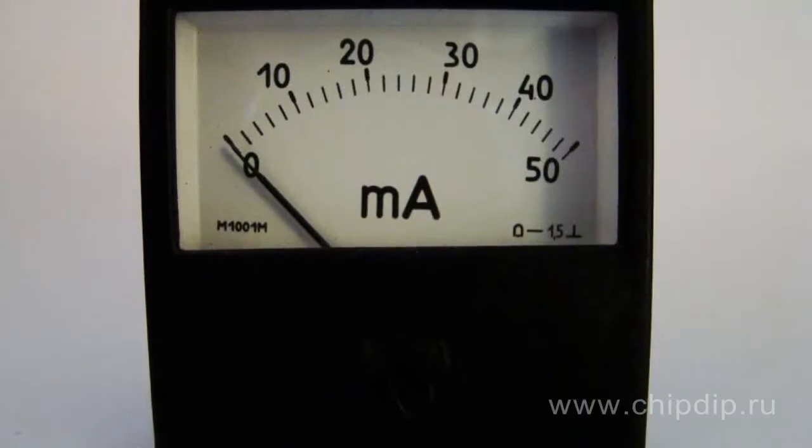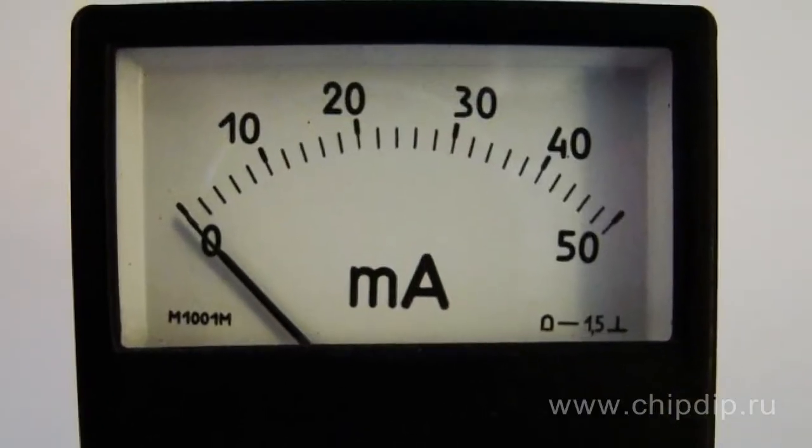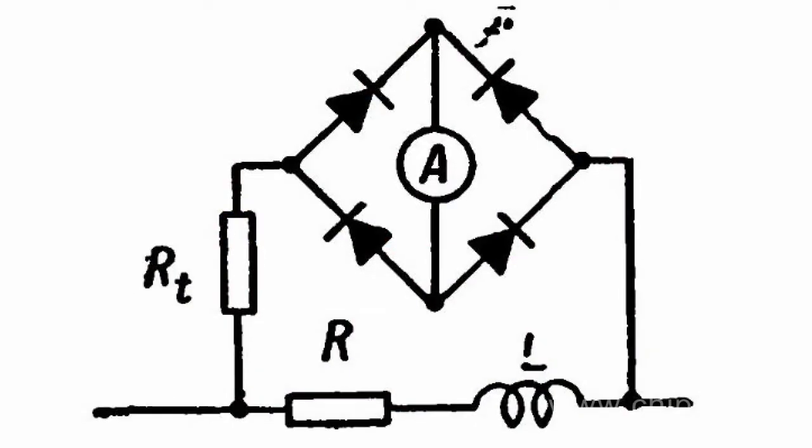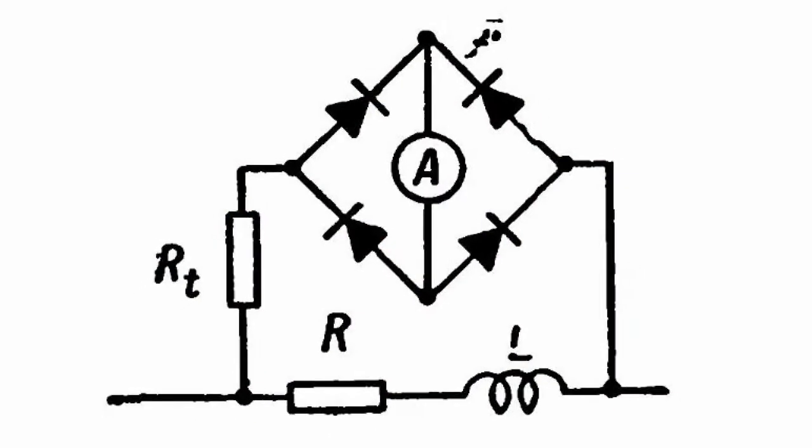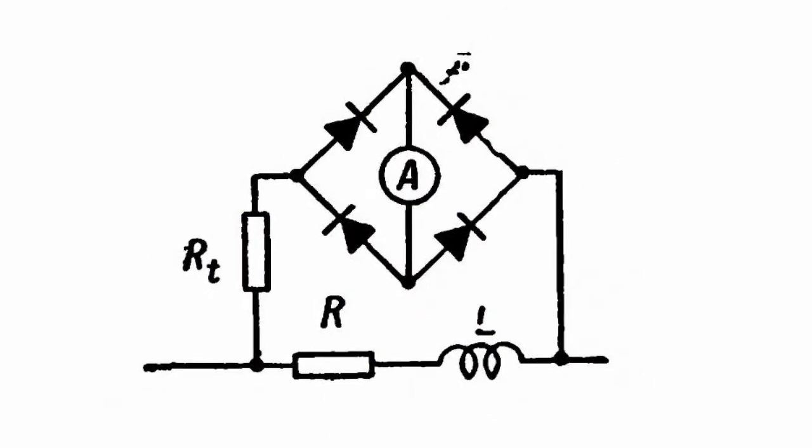AC voltage in detector measurement devices is rectified by a semiconductor rectifier and is measured by a sensitive magneto-electric device. This is why detector devices can measure small alternating currents and voltages equal to a fraction of an ampere or a volt. On the picture you can see a popular connection scheme of a detector device.